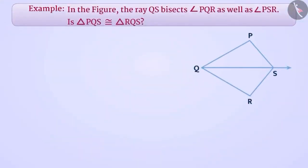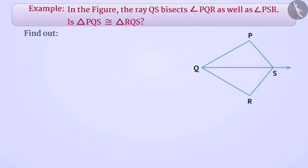In the given figure, the ray QS bisects angle PQR as well as angle PSR. We have to find out whether triangle PQS is congruent to triangle RQS or not.